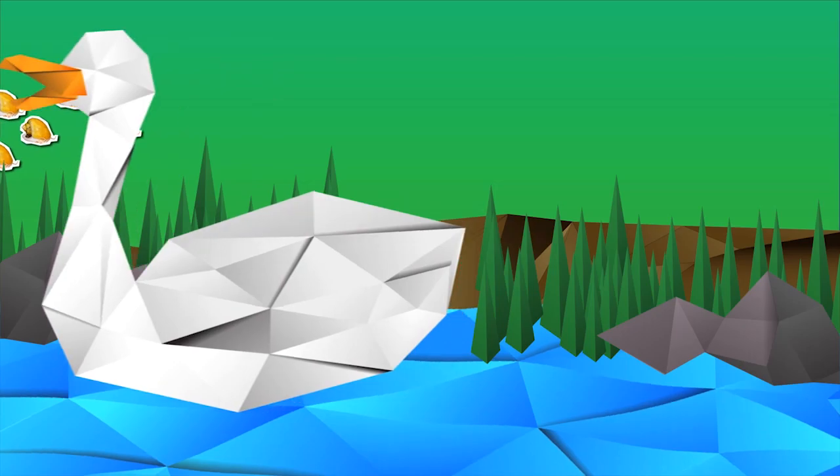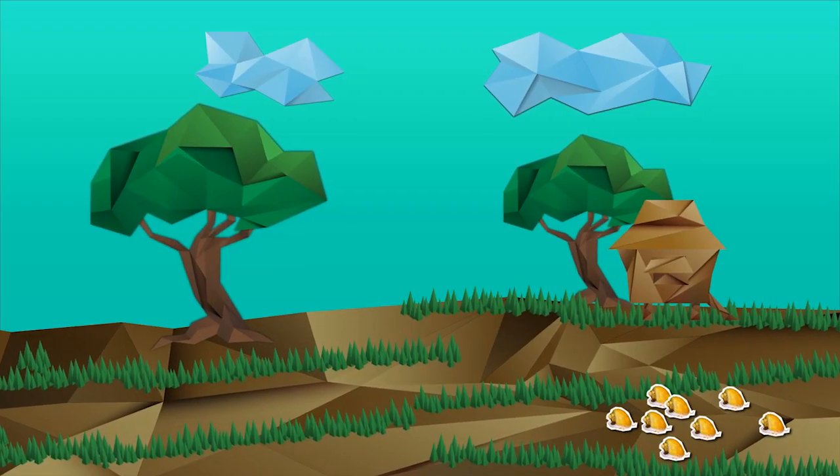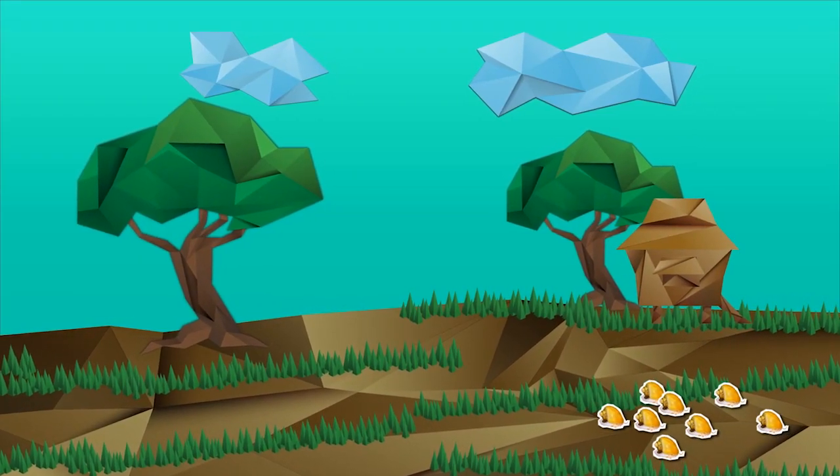Some snails escaped and spread to ponds, trenches, and rice fields, thereby becoming pests.